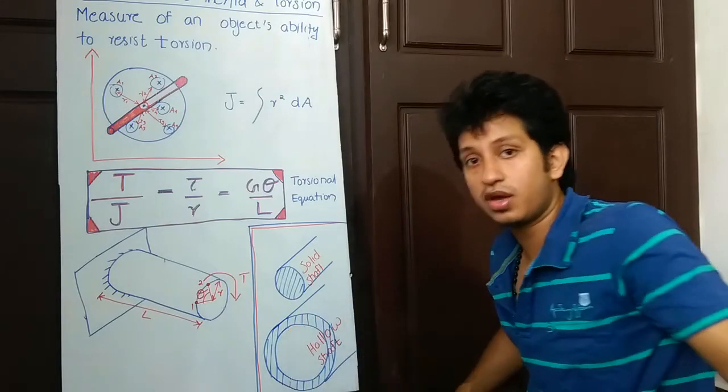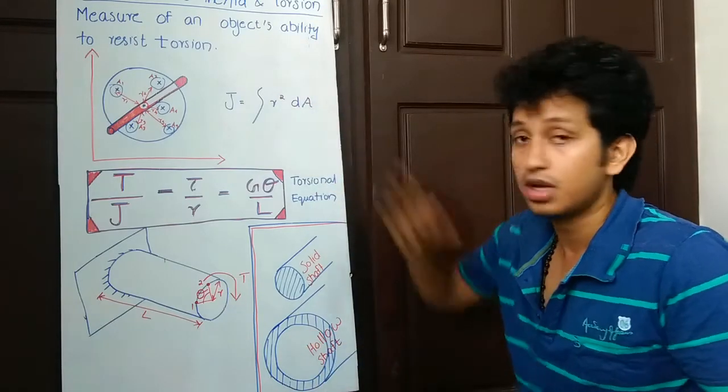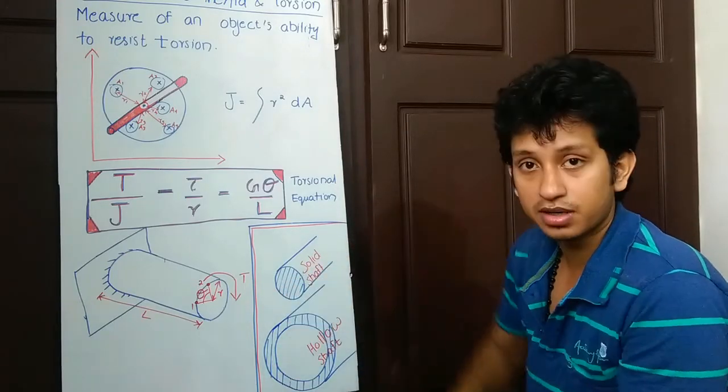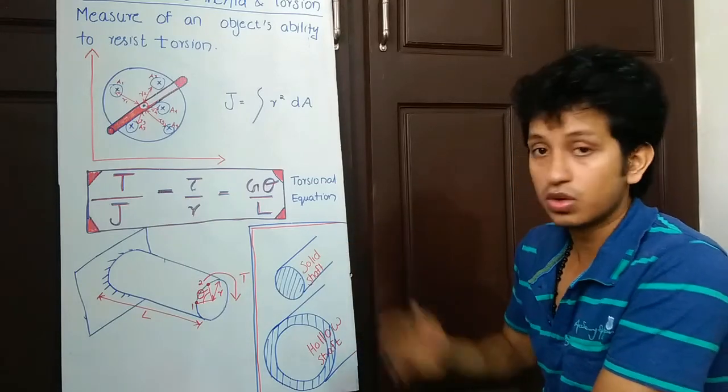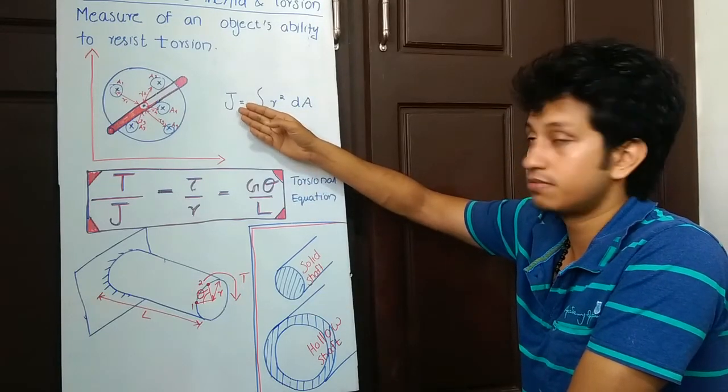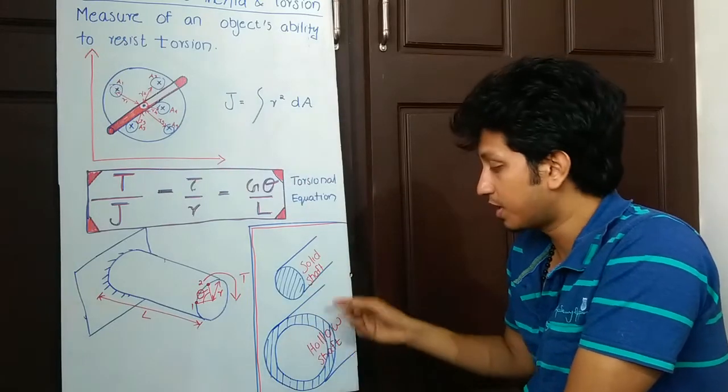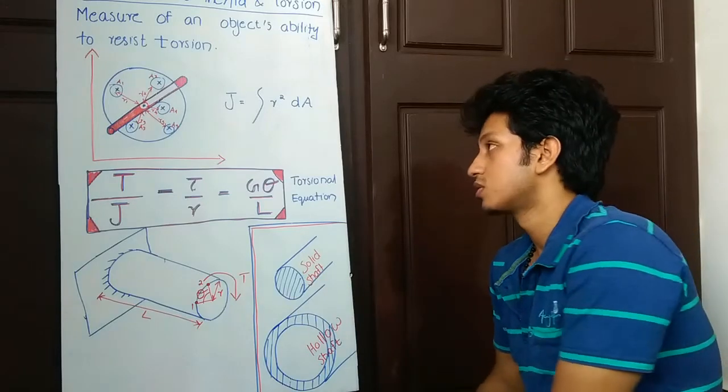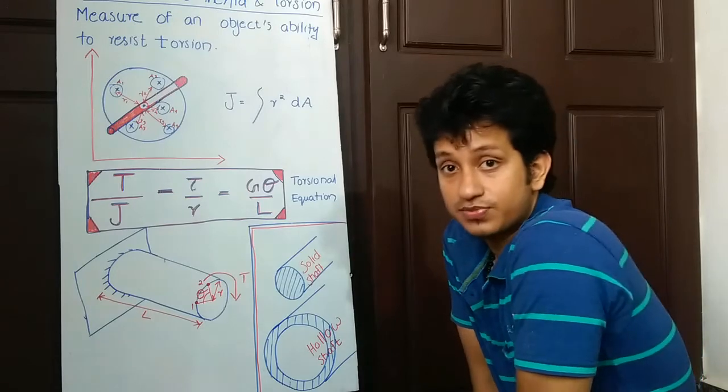We threw away all this less useful mid part that contributes less to the polar moment of inertia, and we took only the good part, the outer part. That's the advantage of hollow shaft over solid shaft. It helps to get the same or more polar moment of inertia and hence more torque by saving material, but you have to increase the radius bigger than the solid shaft. That's all about polar moment of inertia and torsion. Thank you.